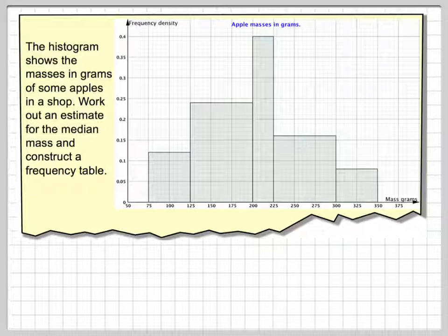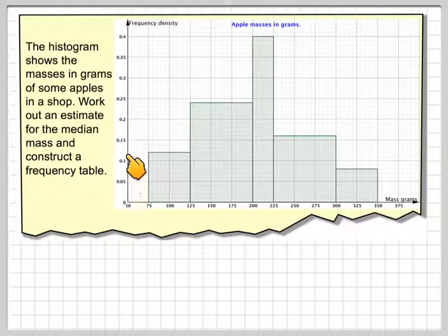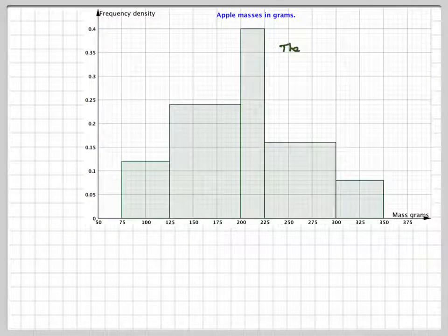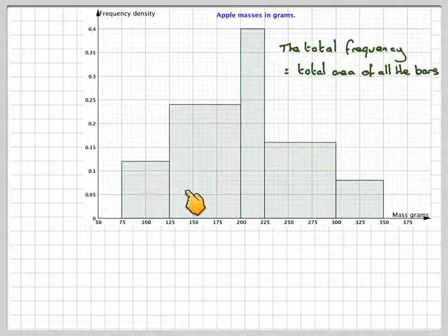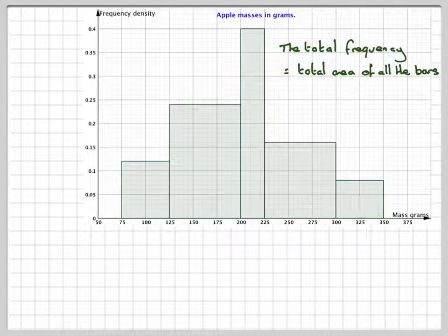What we've got here is the masses along the horizontal axis and the frequency density in the vertical axis. So what we need to do is find the total frequencies. Now the total frequencies is the total area represented by all the bars here.